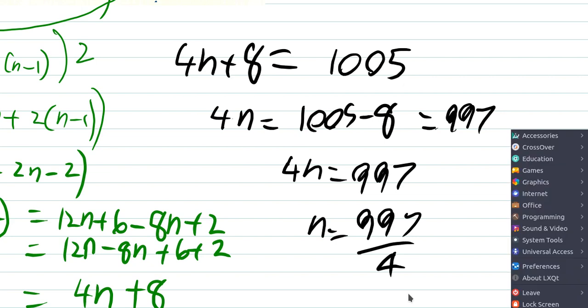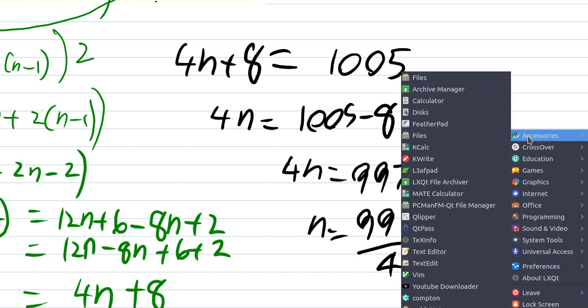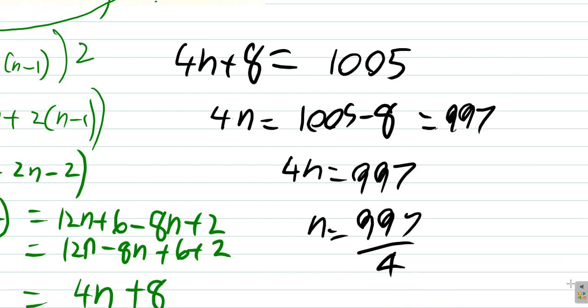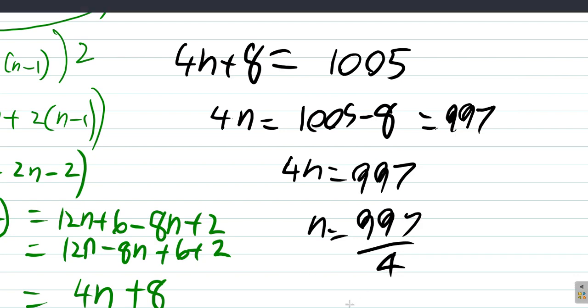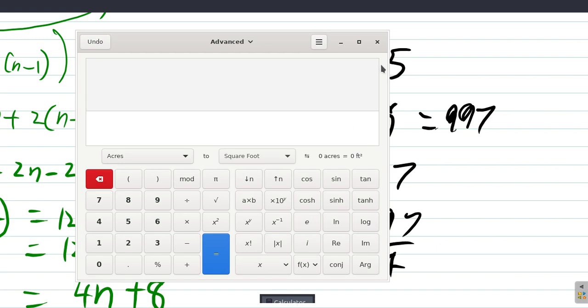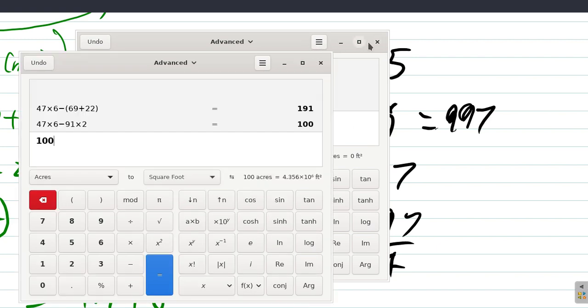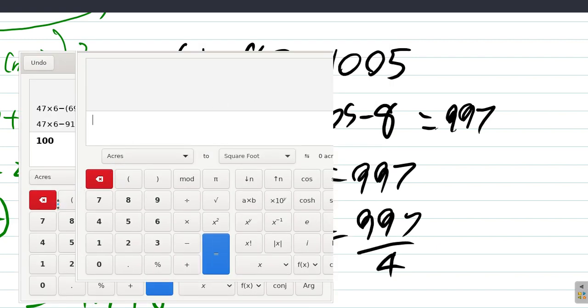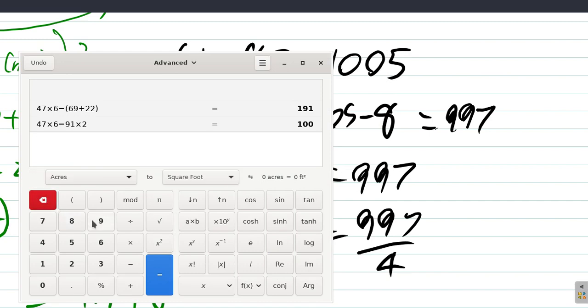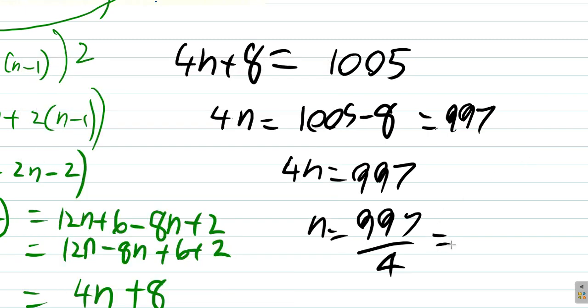But 997 over 4 isn't an integer. It's supposed to be an integer if it could work. Right? The fact that it's not an integer means it would not work. Because if you put 997 over 4, you get 249.25, which is 249 and a quarter.